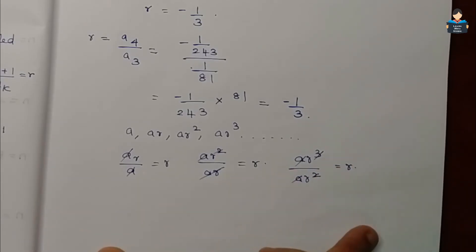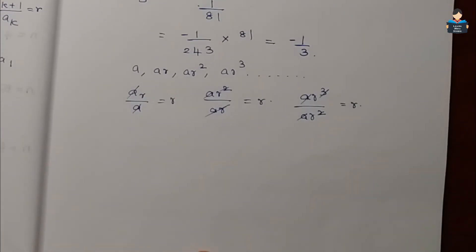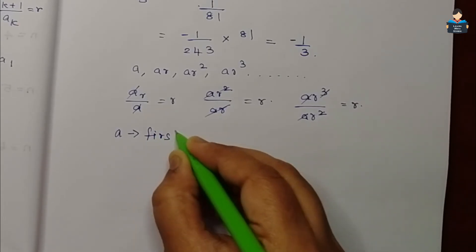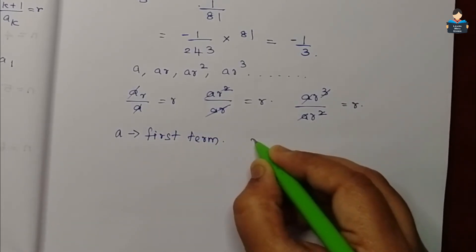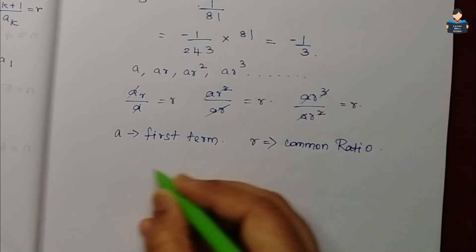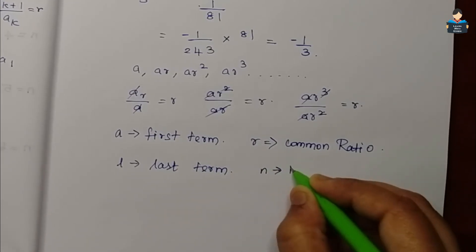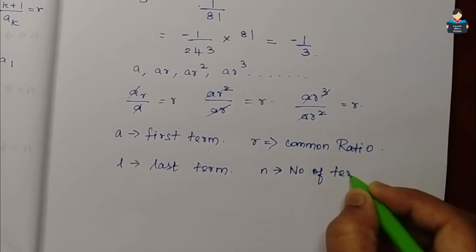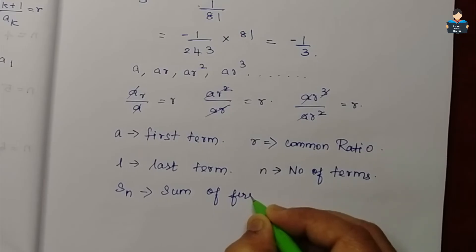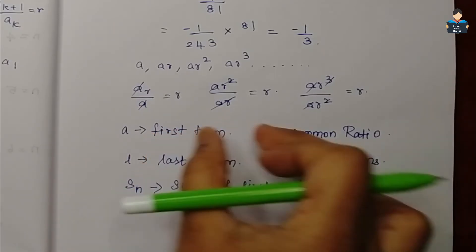The sequence is a geometric progression. Here, the last term is represented, n is the number of terms, and Sn is the sum of the first n terms. This is how we represent the number of terms.